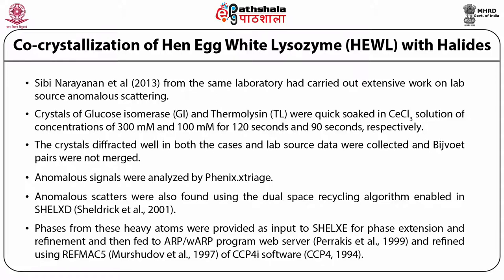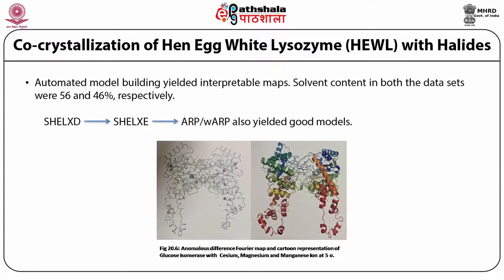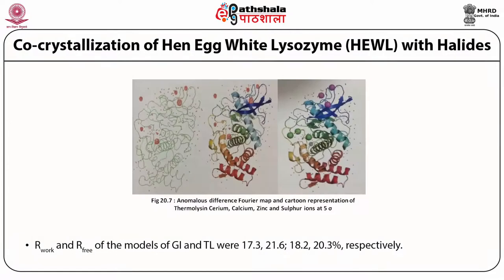Phases from these heavy atoms were provided as input to SHELXE for phase extension refinement and fit to the R4 program web server for modeling. REFMAC5 was used for refinement, available in the CCP4 interface software. This shows the automatic model building yielding interpretable maps. Solvent content in both data sets was about 56% and 46% respectively, and good models were obtained. Figure 20.6 shows the anomalous difference Fourier map and cartoon representation of thermolysin, showing cerium, calcium, zinc, and sulfur ions at 5 sigma. Our work R-factors for glucose isomerase and thermolysin were 17.3%, 21.6%, 18.2%, and 20.3% respectively.